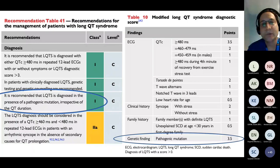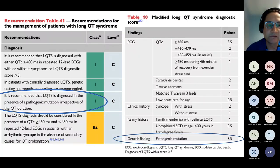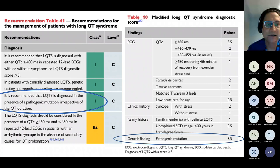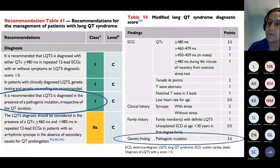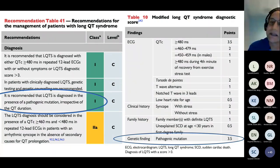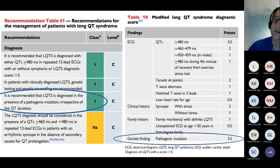I've used a few tables from the relatively recent ESC updates on prevention of sudden cardiac death and ventricular arrhythmia. A lot of which hasn't changed hugely since the 2015 guideline, but a few bits to point out. I want to highlight with Long QT that many of you will be familiar with the diagnostic score — what qualifies someone for a diagnosis.